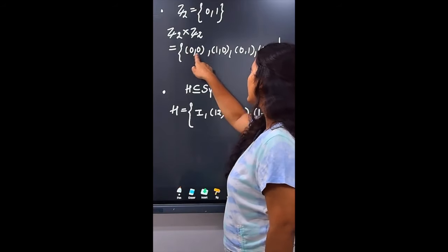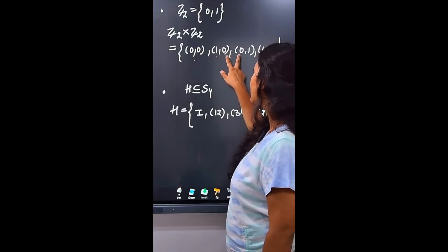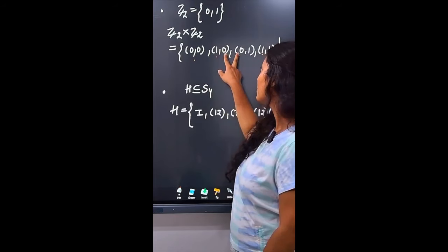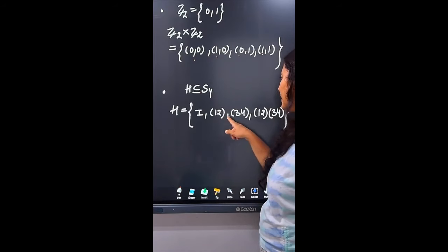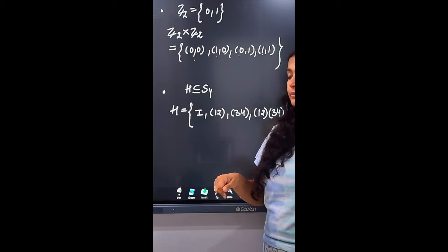How is this? We have four elements. We have to work with identity element. These are two order, and these are two order. How is this? Identity element. Two order.